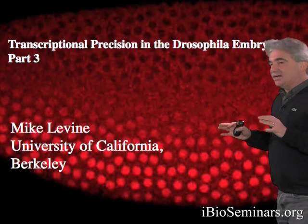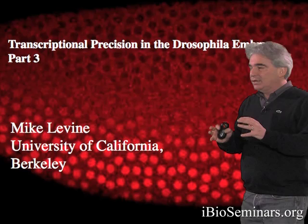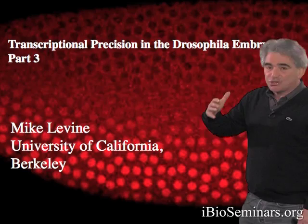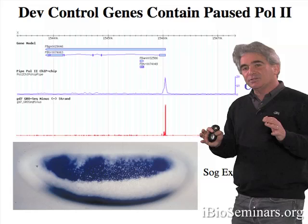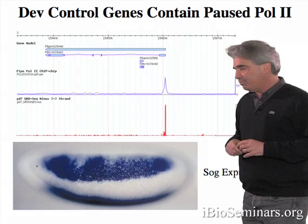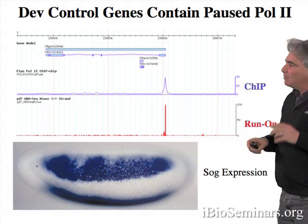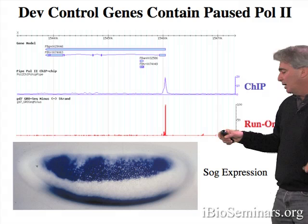I've discussed the shadow enhancer as a mechanism of transcriptional precision, ensuring robust expression in natural populations and more precise, sharper patterns of gene activation. A second mechanism of transcriptional precision I'd like to discuss today is paused RNA polymerase. Paused Pol II was identified initially performing whole-genome ChIP binding assays using antibodies against RNA polymerase II, and what I'm showing here is just one example of paused polymerase.